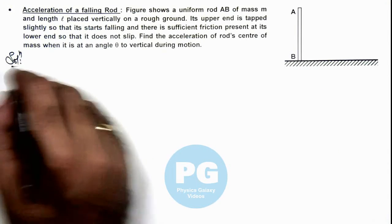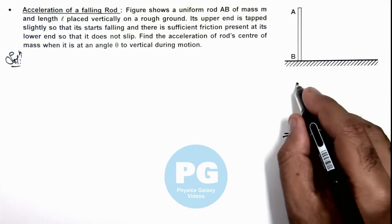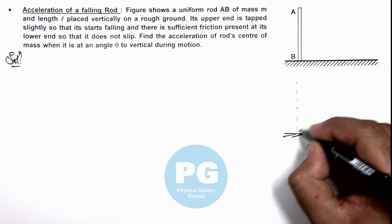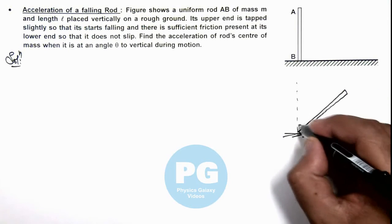In this case, if we draw the position of the rod when it is at an angle theta to vertical, we can say it has fallen to this position at an angle theta.